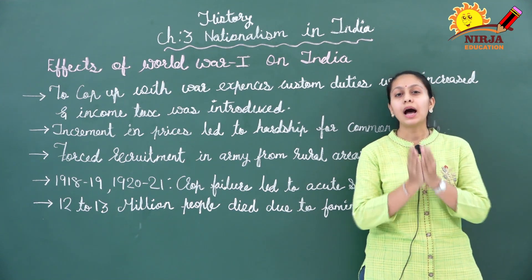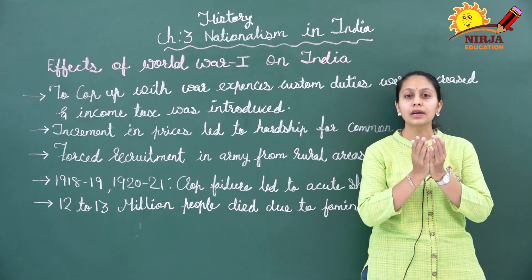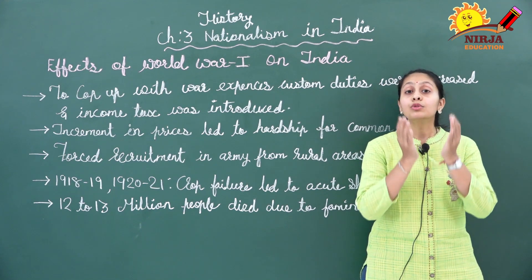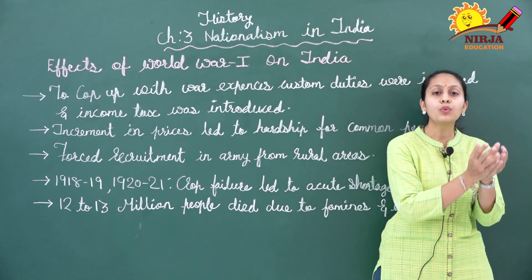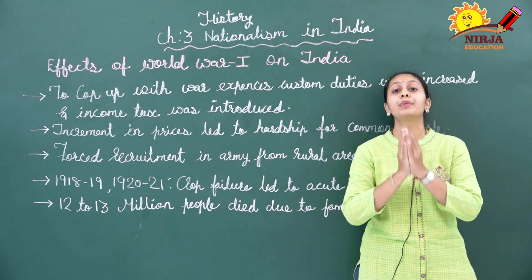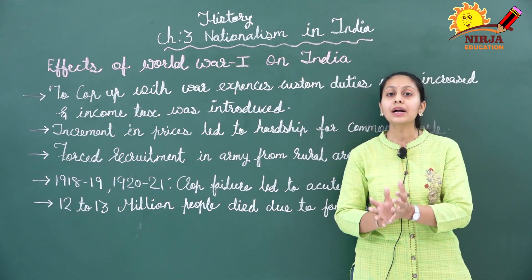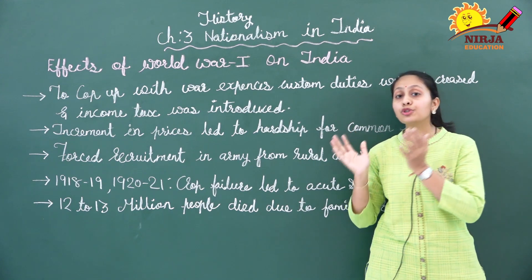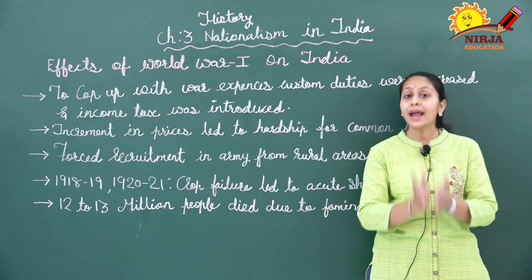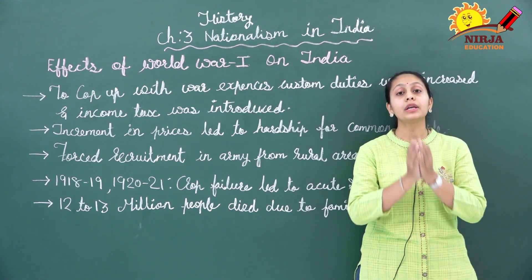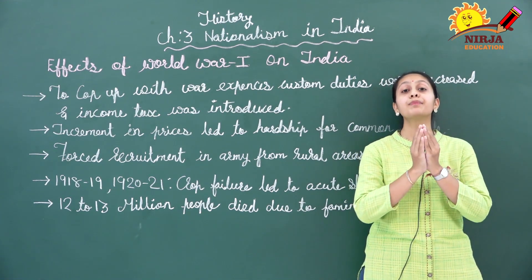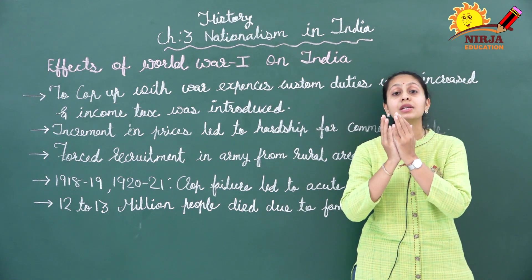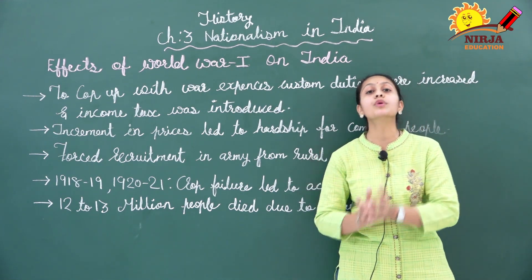Now, along with this — just as during COVID you may have heard that every 100 years some epidemic comes — similarly, in 1920, there came one such epidemic: influenza. Just like the havoc of COVID, the havoc of influenza was present then too. There was also a shortage of food. So, because of this famine and epidemic condition in 1920–21, 12 to 13 million people died — from starvation and from the influenza epidemic.